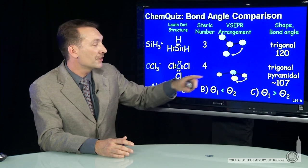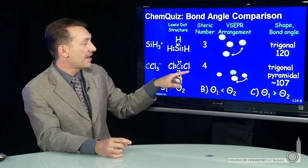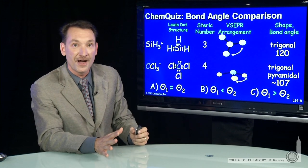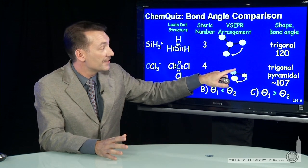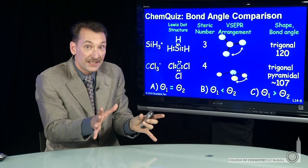For a trigonal pyramidal molecule, the bond angle starts based on steric number four tetrahedron of 109.5°. But because there's a lone pair, that steric interaction squeezes together the three remaining chlorine atoms.